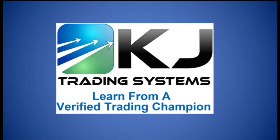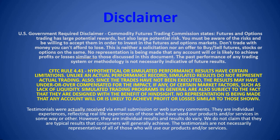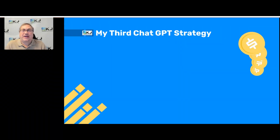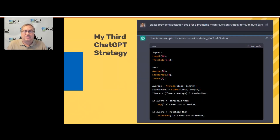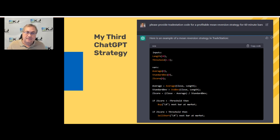I've done another video where I did a couple of strategies with ChatGPT and they didn't come out so good, but I got comments from some people and realized probably some of it was me — I really wasn't giving it good instructions and maybe I just need to ask smarter questions. So I tried again, and for my third strategy I said: please provide me TradeStation code for a profitable mean reversion strategy for 60-minute bars.